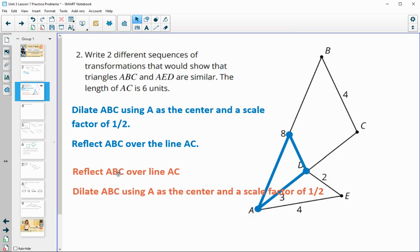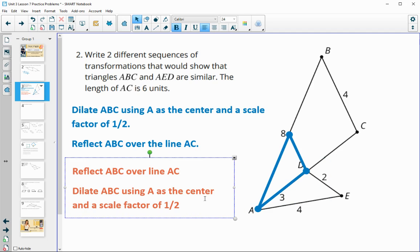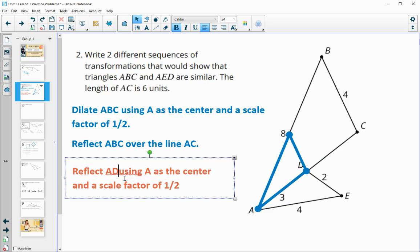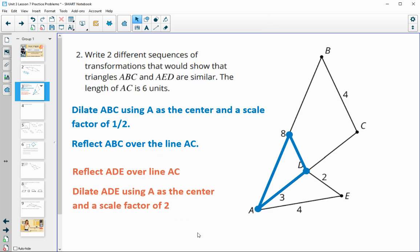Another thing you could do is instead of working with the bigger triangle, you could work with the smaller triangle. So if we worked with this smaller triangle, we could say reflect ADE over line AC, and then dilate ADE using A as the center and a scale factor of two this time, if we wanted to make it bigger. So multiple options there.